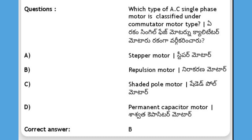Which type of single-phase motor is classified under commutator motor type? Options: stepper motor, repulsion motor, shaded pole motor, permanent capacitor motor. The answer is B, repulsion motor.